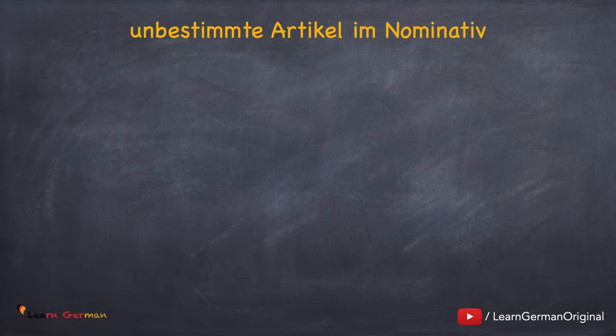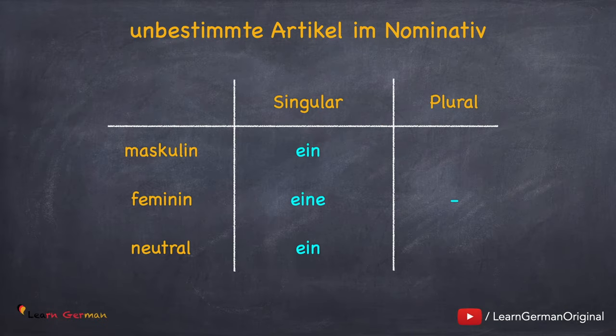So let's see what we have just learned — Unbestimmte Artikel im Nominativ. For masculine singular we use ein. For feminine singular we use eine. For neutral we use the same as masculine, that is ein. There is no unbestimmte Artikel in the plural form.